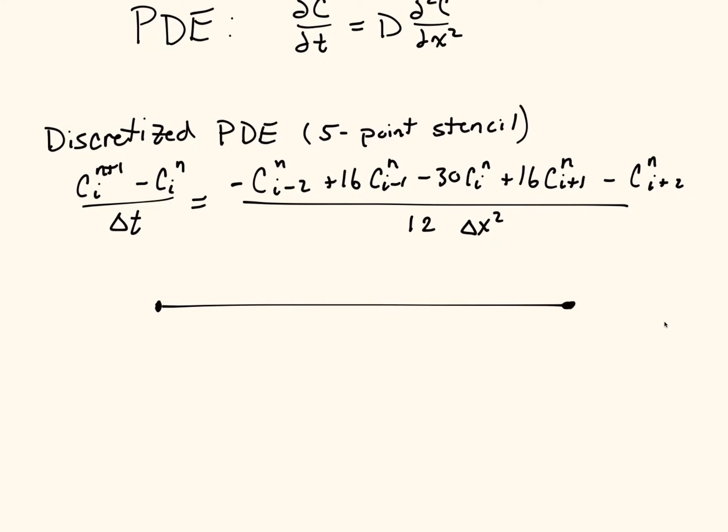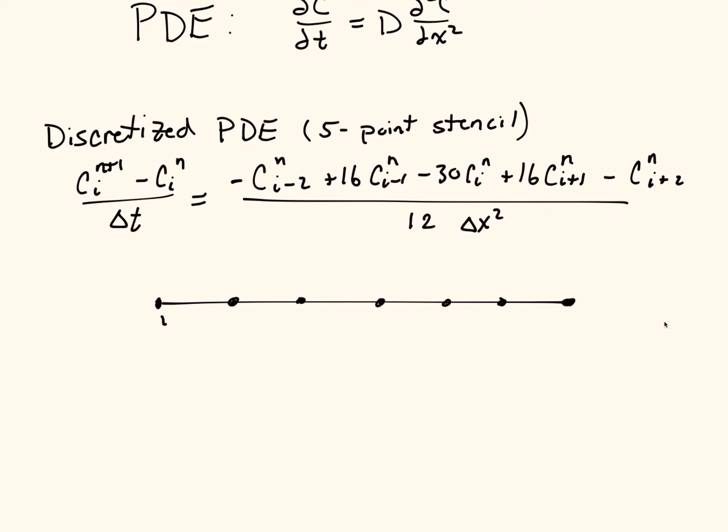Whenever I do periodic boundary conditions I always sketch myself a little picture so I know what's going on. I'm going to number my nodes: 1, 2, 3. Here I'm going to have nx, nx minus 1, nx minus 2, and we have a bunch of more points in the middle.